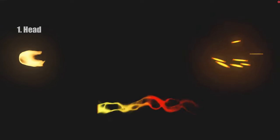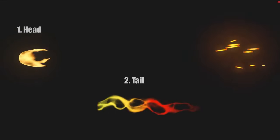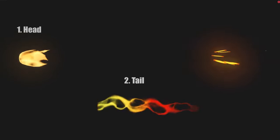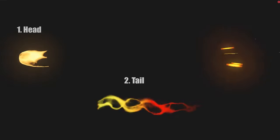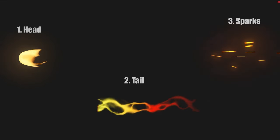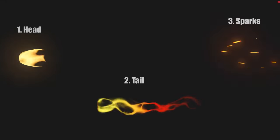Our fireball will be divided into three parts. First we have the head, which is visually the most important part. Then we have the tail, which is a ribbon coming out of the head of the mesh, and this really helps to sell the idea of speed in the projectile. And finally we have some sparks as an extra detail to support the whole theme of the fireball.